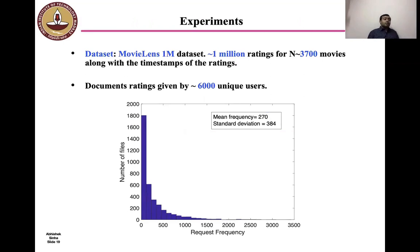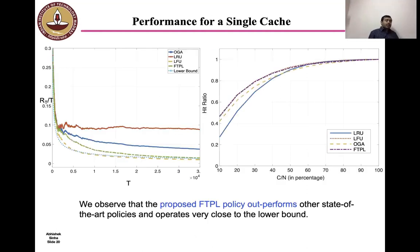Finally, we come to our experimental evaluation section. We use a well-known MovieLens 1 billion dataset for our experimental purpose. This dataset contains around 1 billion ratings for around 3700 movies along with the timestamps of the rating. These ratings are given by around 6000 unique users. A histogram of the request frequency is shown below. This slide shows the relative performance of the FTPL policy compared to other baseline policies in terms of regret and hit ratios.